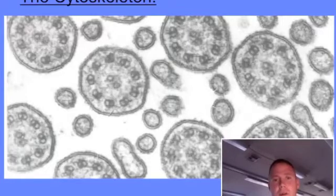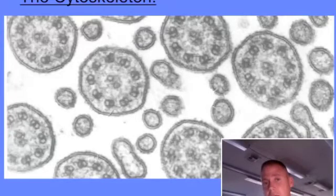Transport vesicles and organelles are moved by two motor proteins along these tracks. Back when we talked about actin filaments, the motor protein myosin was associated with actin. But when you talk about tubulin and microtubules, you should associate the motor proteins kinesin and dynein with the tubulin tubes.